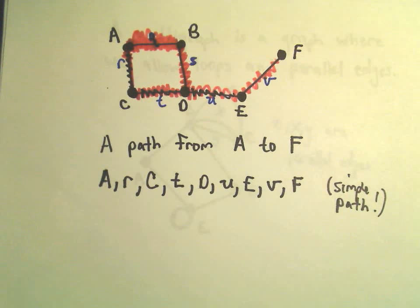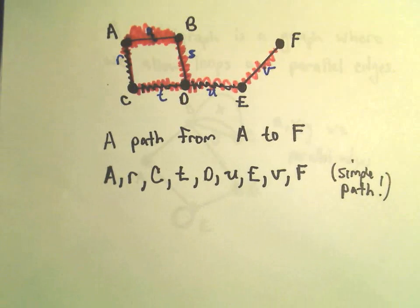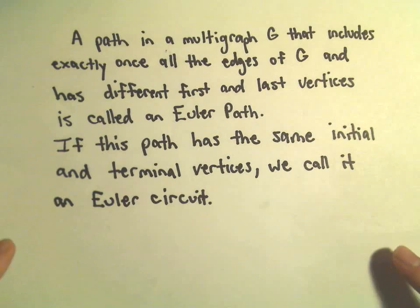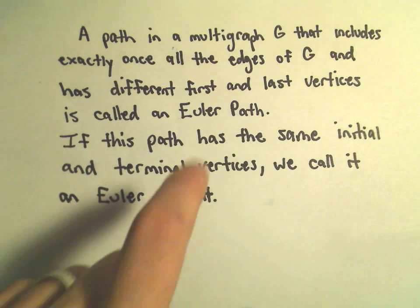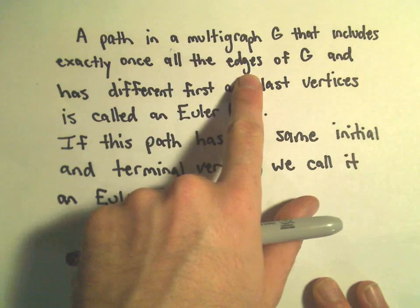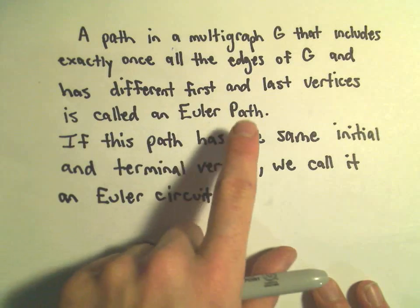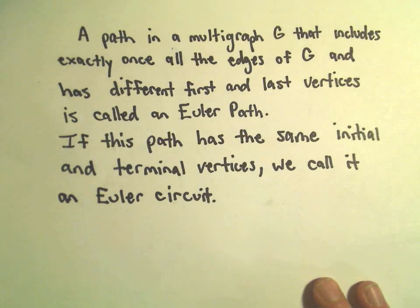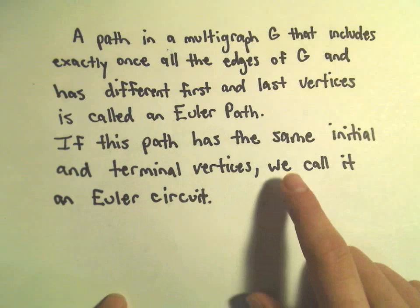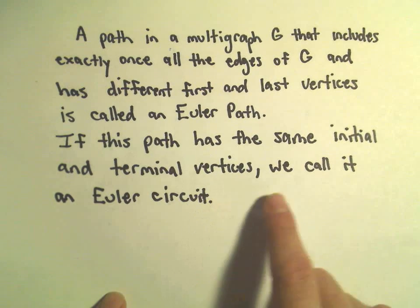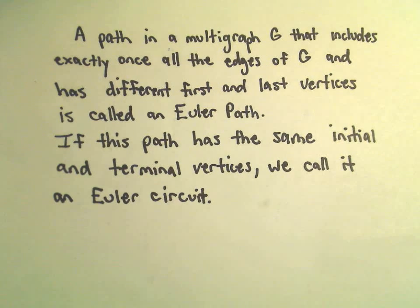So now the heart of the matter: a path in a multigraph that includes exactly once all the edges, but has different starting and finishing vertices — that's what's called an Euler path. And if the path has the same starting and stopping vertex, we call it an Euler circuit.